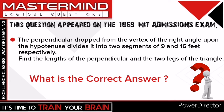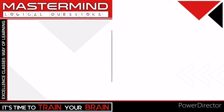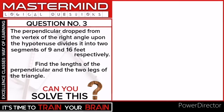Try this problem, and when you are ready, keep watching the video for the solution. Our question says that the perpendicular dropped from the vertex of the right angle upon the hypotenuse divides it into two segments of 9 and 16 feet respectively, so we will get started by drawing a diagram.